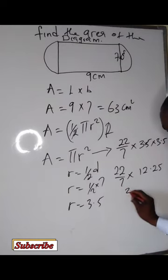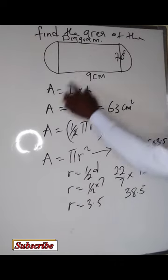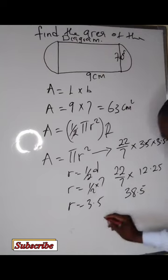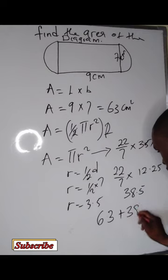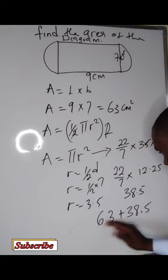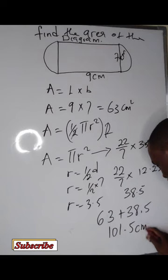Alright, so we have 38.5. So having found the area of the semicircles and the area of the rectangle, what do we do? Add both of them. We have 63 plus 38.5. Adding both will give us 101.5 cm squared.